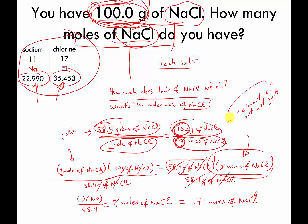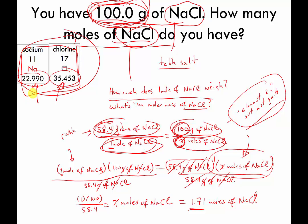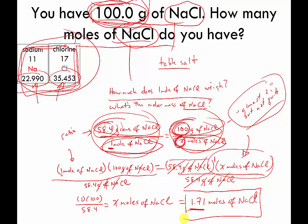Did we go insane? Our number was supposed to be almost 2 but not quite. 1.71 sounds like it's in that neighborhood, so we probably did the calculation correctly. So if you have 1 mole of NaCl it weighs 58.4 grams — information we got from the periodic table. And if you have 100 grams of NaCl, that's 1.71 moles of NaCl. That's how you convert grams to moles for more complicated molecules: add up the molar masses of all the pieces, then use that as your conversion factor — the calculations are the same as before.